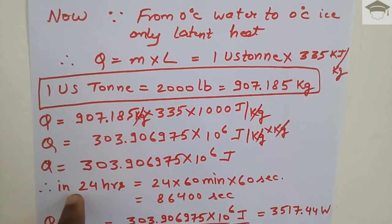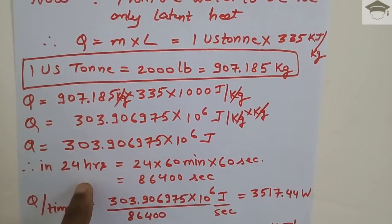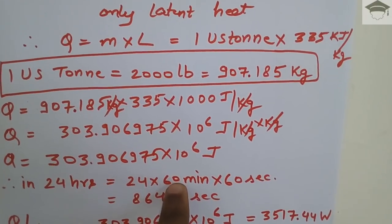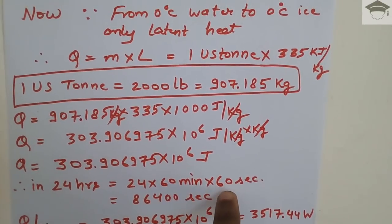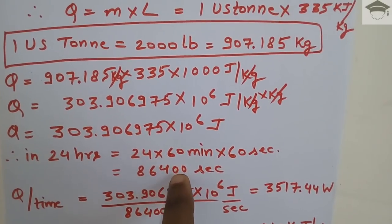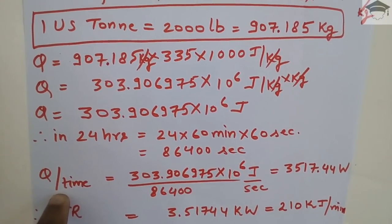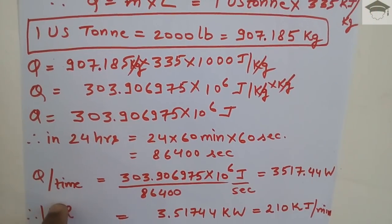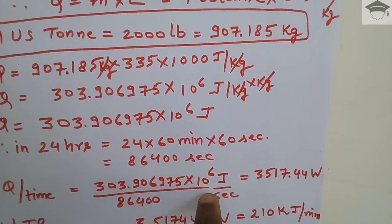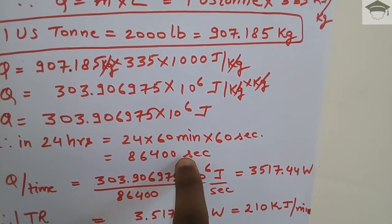Since this conversion is over 24 hours, we calculate the total seconds: 24 × 60 minutes × 60 seconds = 86,400 seconds. Now, power is heat per unit time, so we divide Q by time: 303.906975 × 10⁶ joules divided by 86,400 seconds.